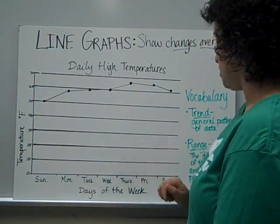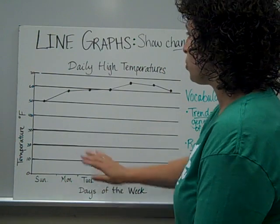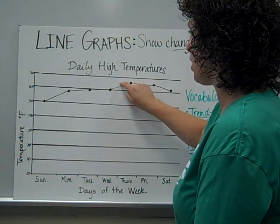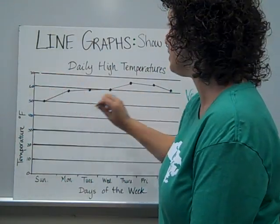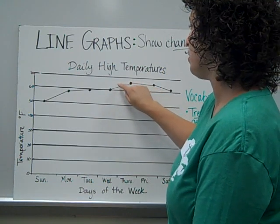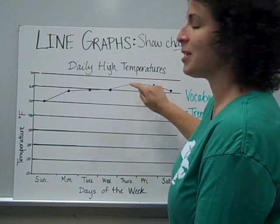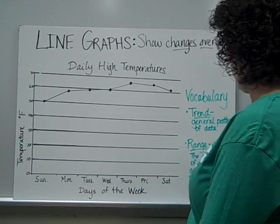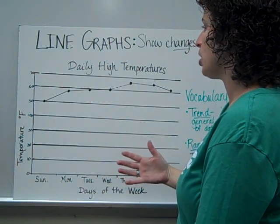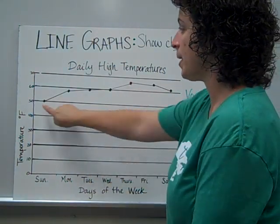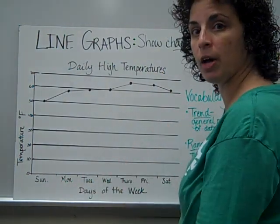The range of the temperatures — we're going to find that by finding the difference of the greatest and least data points. When I look here, I see that this point is the highest. Following it over to my y-axis, my interval this time is 10, and this looks like it's slightly above center. So I'm going to estimate that this temperature is about 66 or 67 degrees. Then I would find my least temperature, which is down here at 50 degrees. To find the range of this graph, I would take my greatest temperature minus my least temperature, and that would be the range of temperatures for this week.